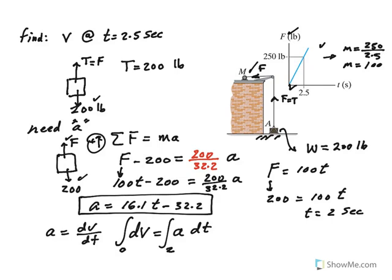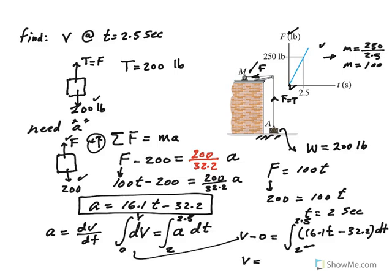If you plug in t equals 2.5, the question is, what is velocity? The integral becomes v minus zero. The acceleration is 16.1t minus 32.2, integrated with respect to t, and evaluated between two, not zero. That's the catch. So v becomes 16.1 divided by two, that's 8.05 t squared minus 32.2t, evaluated between two and two and a half.